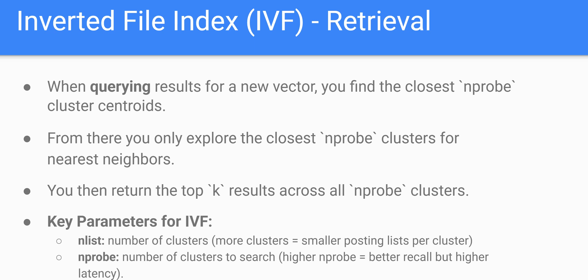IVF is governed by two key parameters. nList is the number of clusters — if you have more clusters, you'll have a smaller number of vectors per cluster. But from k-means clustering, the more clusters you create, you start to lose some information. You're supposed to find the optimal number of clusters that properly segments the data, using the elbow method. If you choose more clusters, you'll have a smaller posting list per cluster, and it gets closer and closer to brute force search.